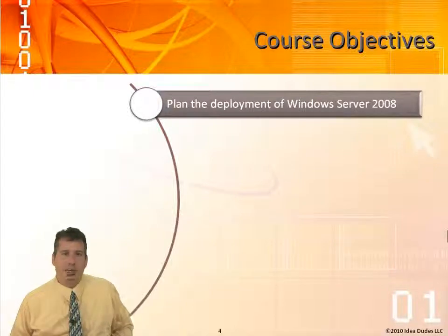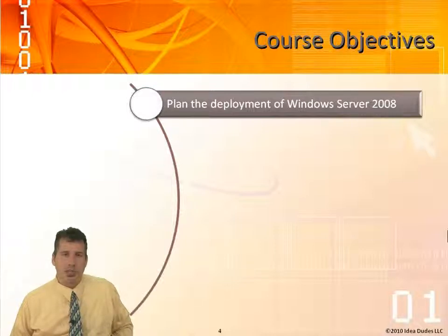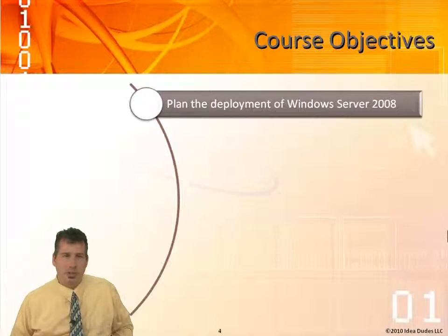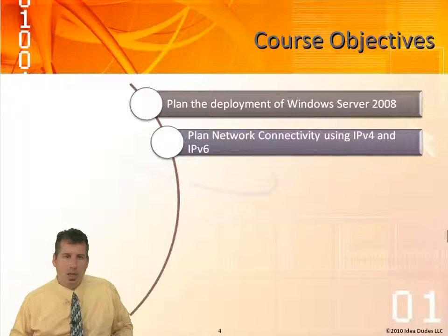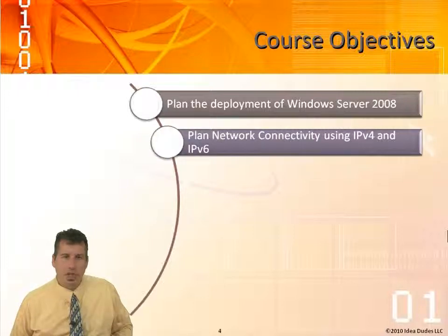We're going to learn about the planning and deployment of Windows Server 2008. We're going to be looking at the XML file — which is the unattend XML file — that we're going to configure with the SIM, the System Image Manager. We'll also look at the different ways of deploying Windows Server 2008 through a network share, using PXE. We can automate it through SCCM, which is System Center Configuration Manager 2007. We're also going to look at IPv4 and IPv6 transition technologies such as ISATAP, 6-to-4, Teredo, and the dual stack between IPv4 and IPv6.